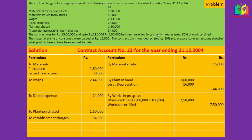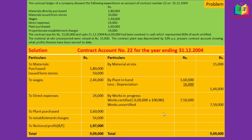For work in progress, work certified is 100% of cash received. So 6 lakh × 100 ÷ 80 = 7 lakh 50,000. There is no work uncertified in this problem, so we put nil, giving 7 lakh 50,000 in the outer column. The total is 9 lakh 9,000, and the balancing figure — the notional profit — is 1 lakh 97,000. If the balance appears on the credit side, it is a notional loss; on the debit side, it is a notional profit.